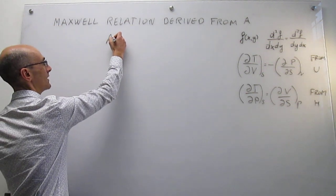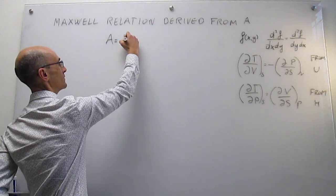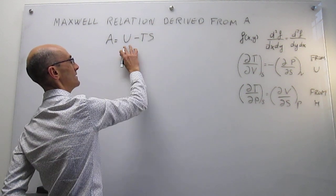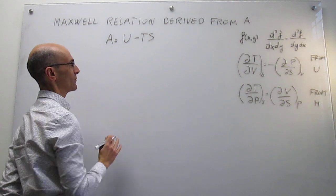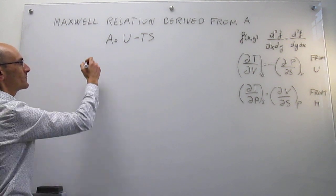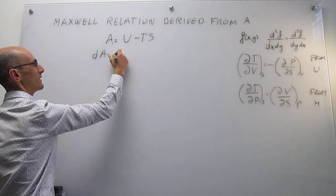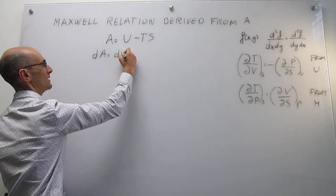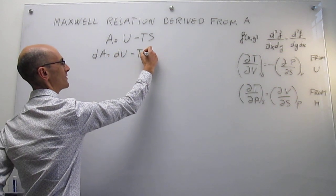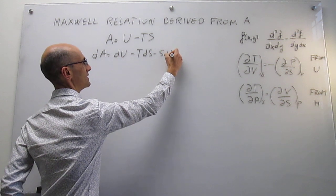The definition of the Helmholtz energy is simply U minus TS — internal energy minus the product of temperature and entropy. Taking the total derivative gives us dU minus T dS minus S dT.